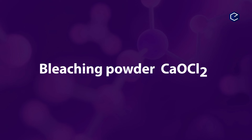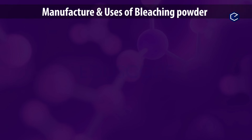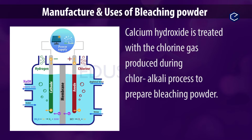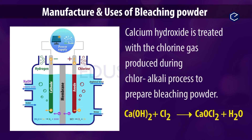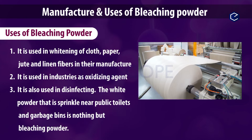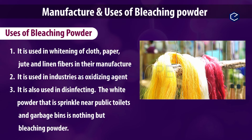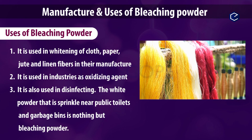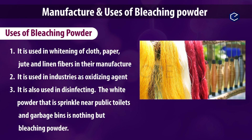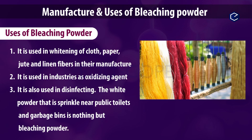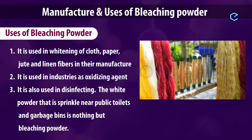The next salt is Bleaching Powder (CaOCl₂). Calcium hydroxide is treated with Chlorine Gas produced during the Chloralkali Process to prepare bleaching powder. The reaction is: Ca(OH)₂ + Cl₂ → CaOCl₂ + H₂O. It is used in whitening of cloth, paper, jute, and linen fibers, and as an oxidizing agent in industries.